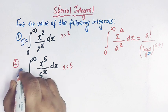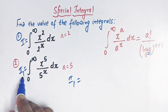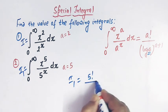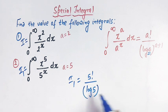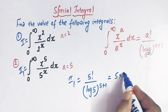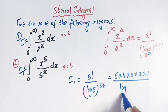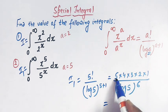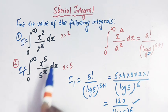In the second integral we have a equal to 5. The value of this integral i1 can be written as 5 factorial divided by log of 5 raised to 5 plus 1. So 5 factorial is 5 times 4 times 3 times 2 times 1 — that is 120 — and we have log of 5 raised to 6. So the answer is 120 divided by (log 5)^6.